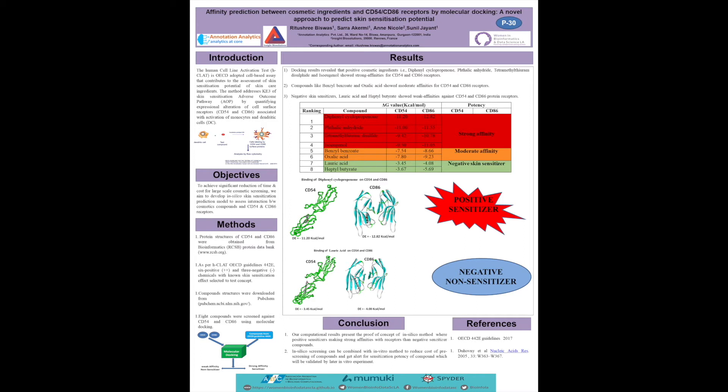Compounds like benzoyl benzoate and oxalic acid showed moderate affinities for CD54 and CD86 receptors. Negative skin sensitizers, lauric acid and heptyl butyrate, showed weak affinities against CD54 and CD86 protein receptors.